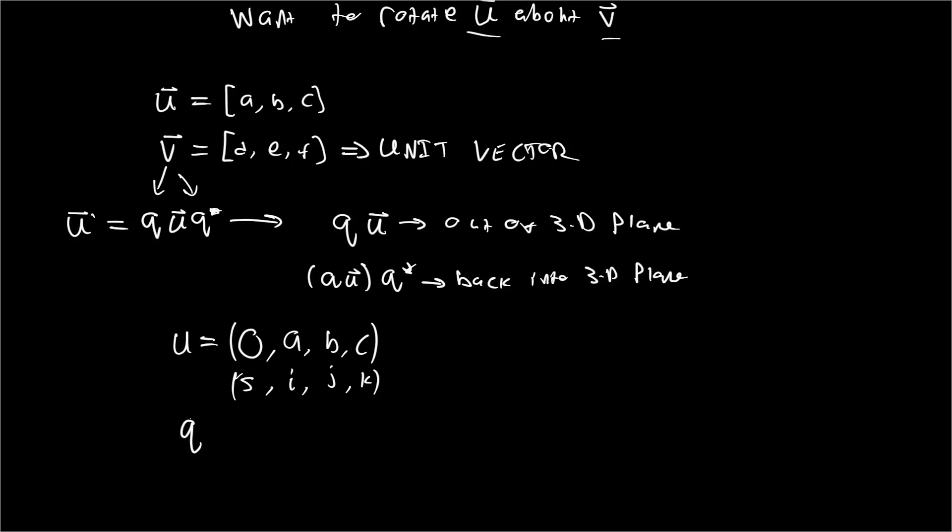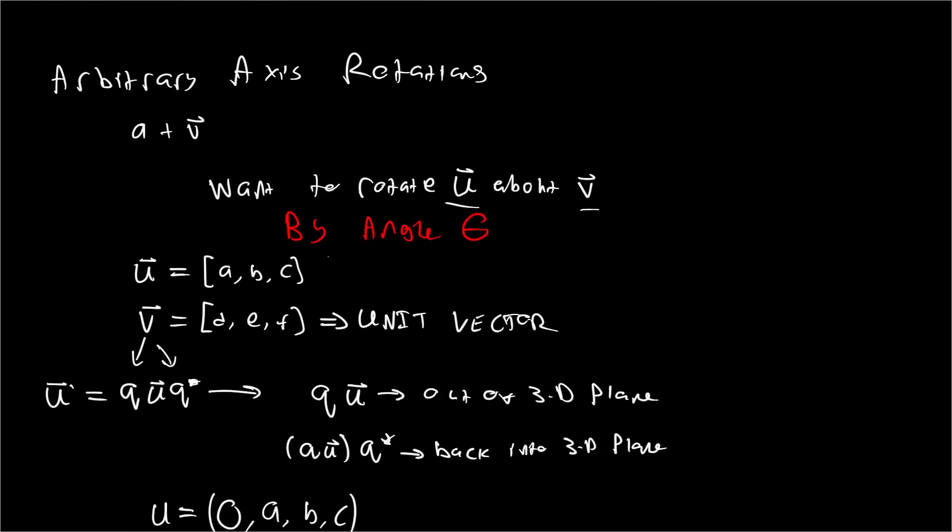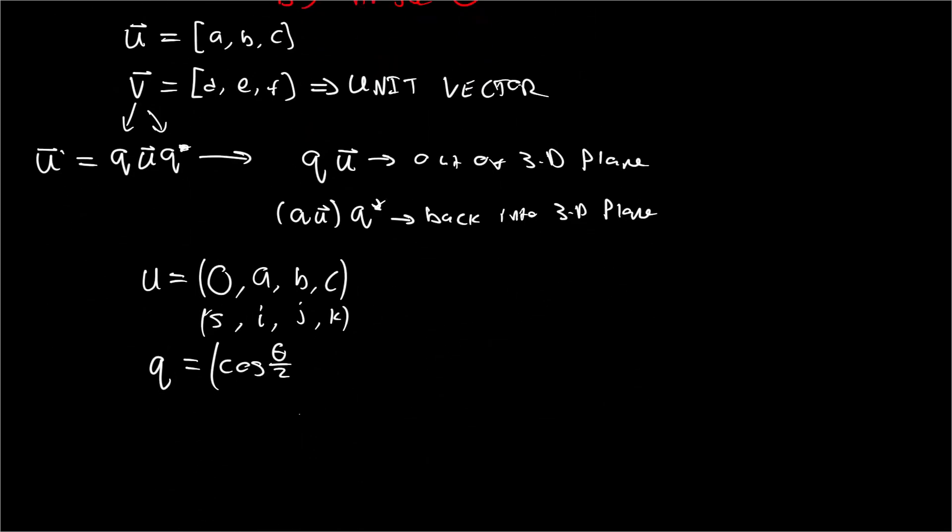And that's basically it for u. Now for our quaternion q that we're going to be using to rotate this, this one's a bit more interestingly defined. Basically we'll have our scalar. Our scalar is going to be equal to the cosine of our rotation angle theta over 2. So that's where theta - let's just define that a bit more concretely up here - by angle theta. And this would be angle theta about the axis using a right-handed coordinate system. So cosine theta over 2, and then you have i, your i component. In this case your i component is going to be d, and that's going to be multiplied by sine of theta over 2, e sine theta over 2, f sine theta over 2.